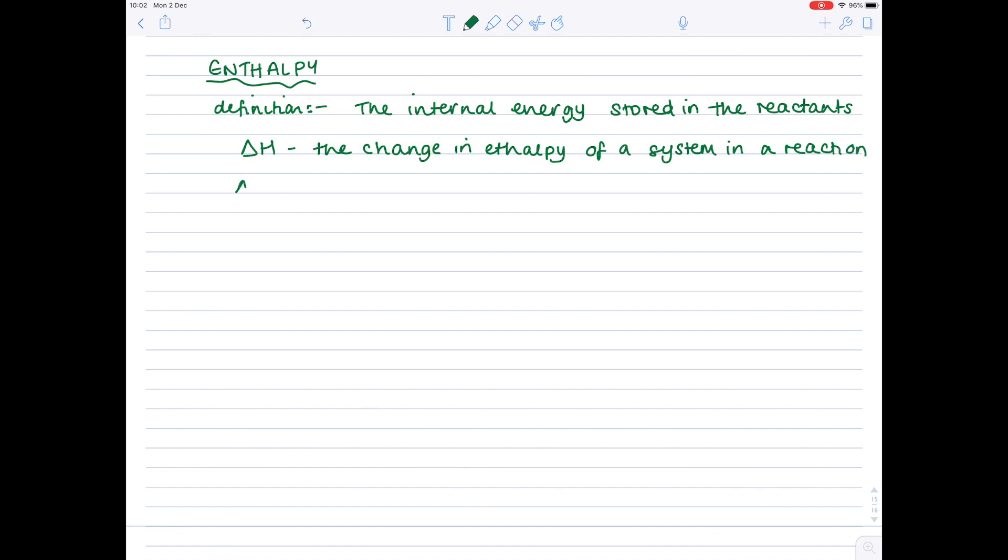And notice that delta H is negative for an exothermic reaction and delta H is positive for an endothermic reaction. Don't worry if you're not following this too much. The questions they ask are very specific and it's more about the calculations you can do and how you recognize whether the reaction is endothermic or exothermic.